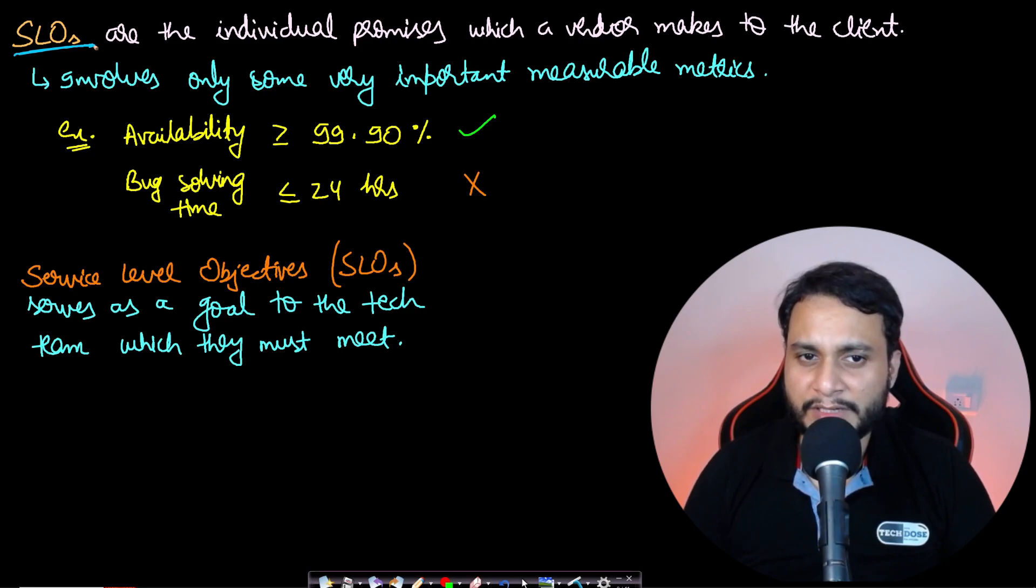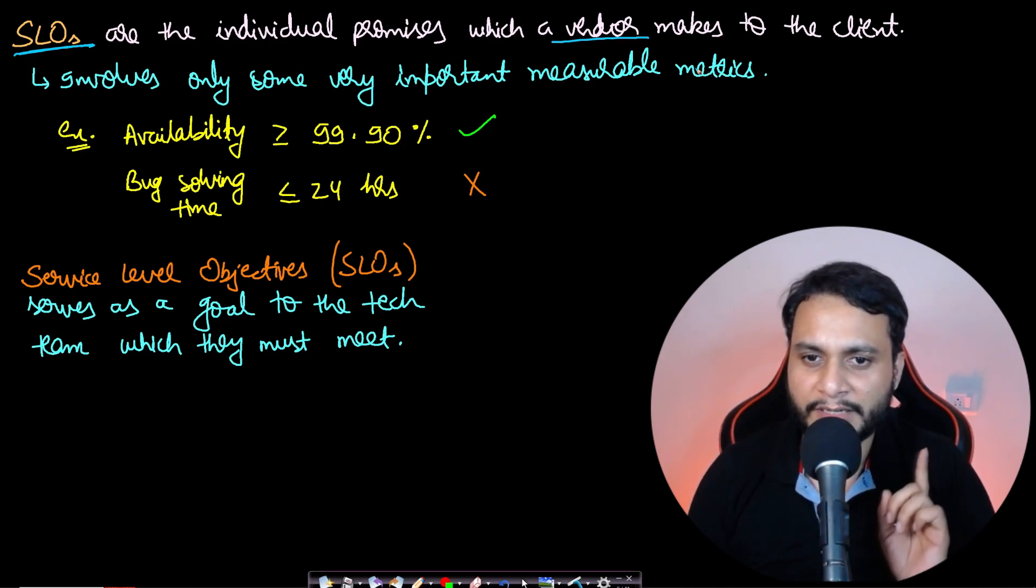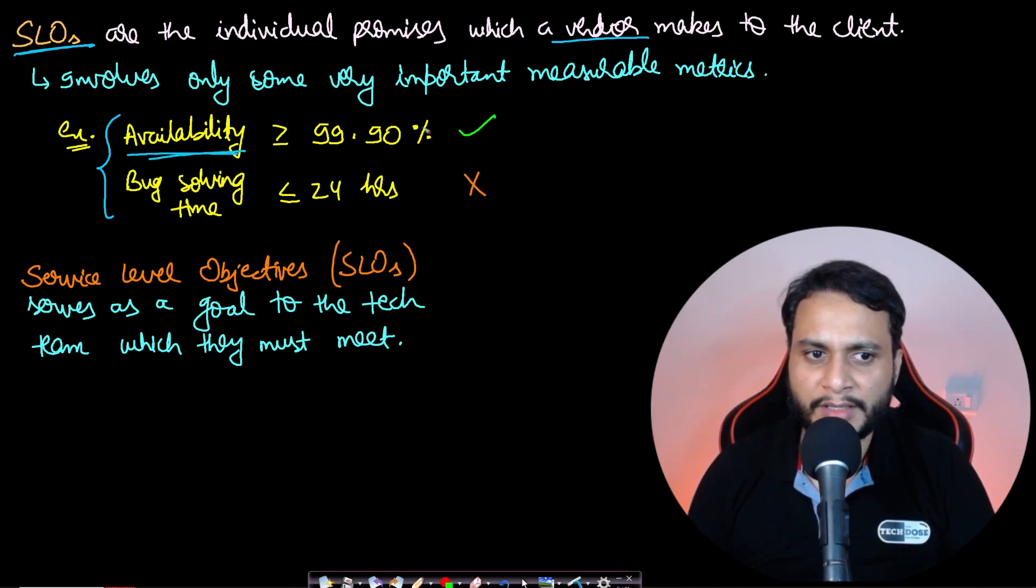Now coming on to the next point on SLOs, which is service level objective. SLOs are the individual promises which a vendor makes to the client, and it involves only some very important measurable metrics. Because as I had given in the car example, all the metrics may not be measurable. In this case, let's take two of such points like availability promise of greater than or equal to 99.9%, and this is very highly measurable. So yes, this can be included into the SLO. But if the SLA contained a bug solving time to be less than or equal to 24 hours, then we may not be able to actually deliver it in the SLO.